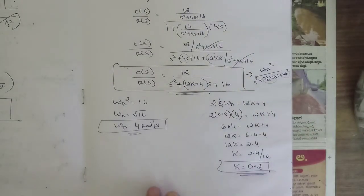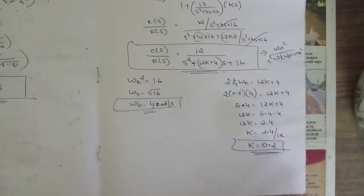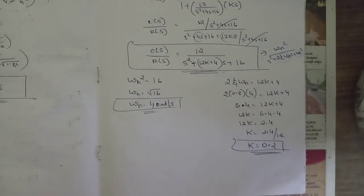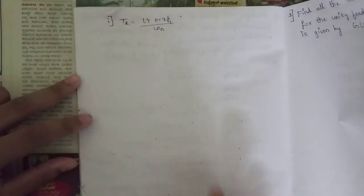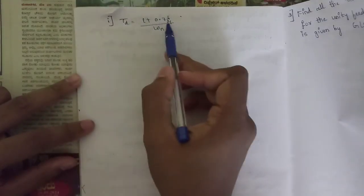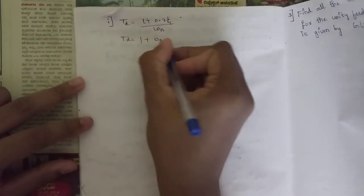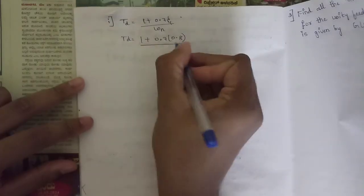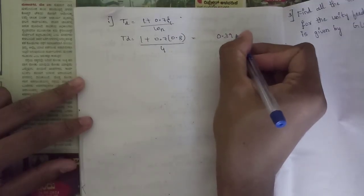Now we need to find all the time domain specifications one by one: delay time td, rise time tr, peak time tp, peak overshoot Mp, and settling time ts. It's straightforward — just apply the direct formulas with the known values of ζ = 0.8 and ωn = 4.